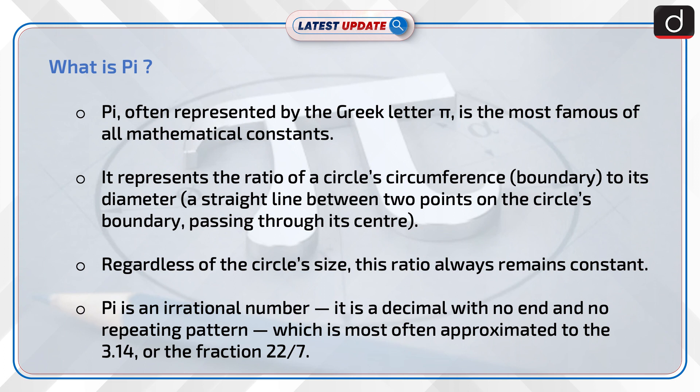Pi is an irrational number. It is a decimal with no end and no repeating pattern, which is most often approximated to 3.14 or the fraction 22 upon 7.